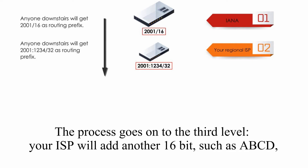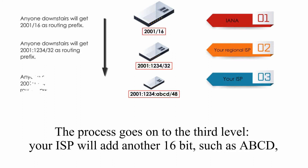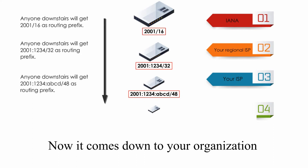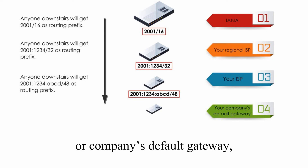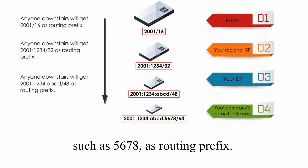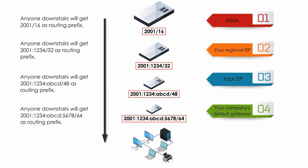The process goes on to the third level. Therefore, your ISP will add another 16-bit, such as ABCD. Thus, anyone downstairs will get 2001:1234:ABCD as routing prefix. Now it comes down to your organization or your company's default gateway, which will add one more 16-bit subnet ID, such as 5678. Thus, any device will get a 64-bit routing prefix.